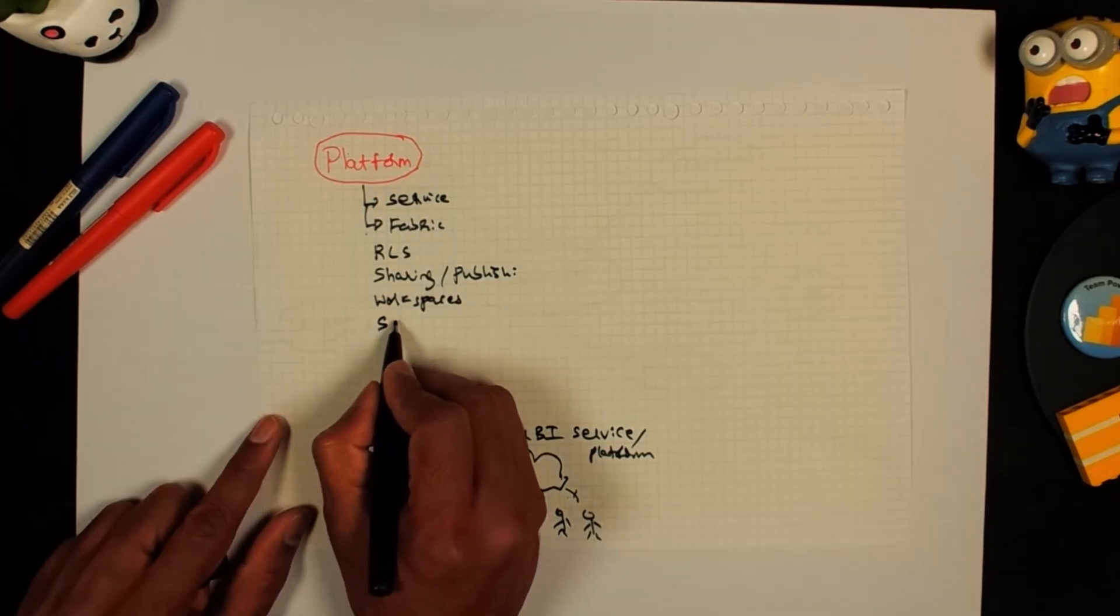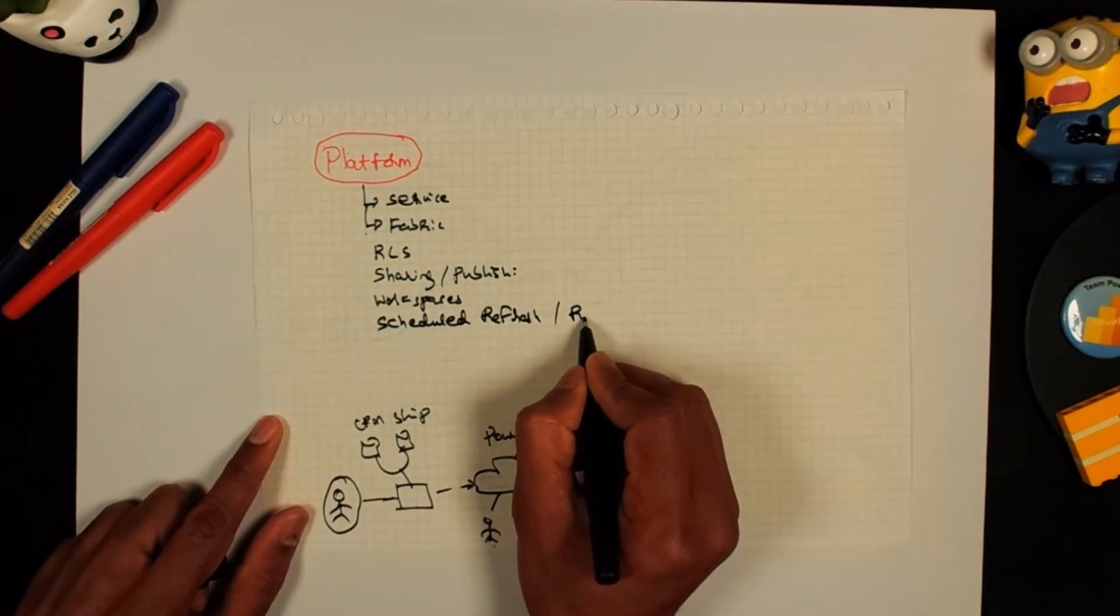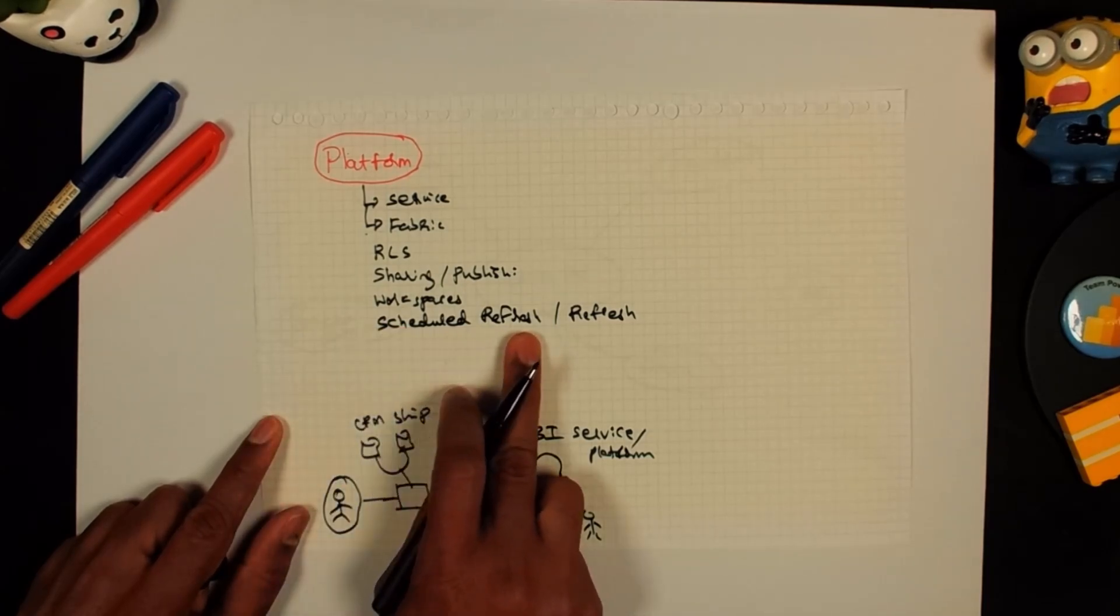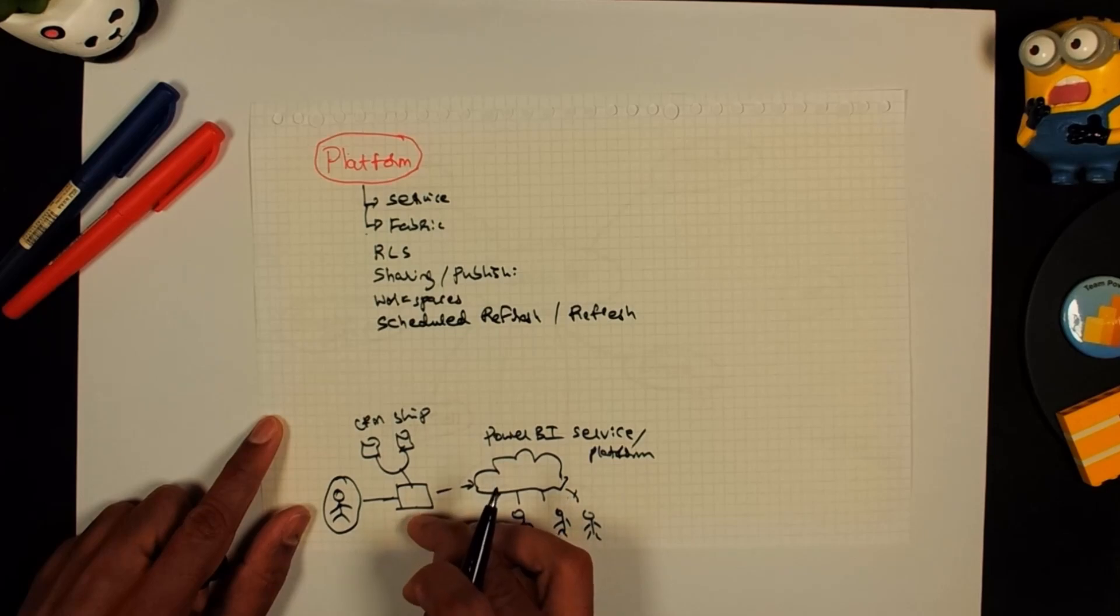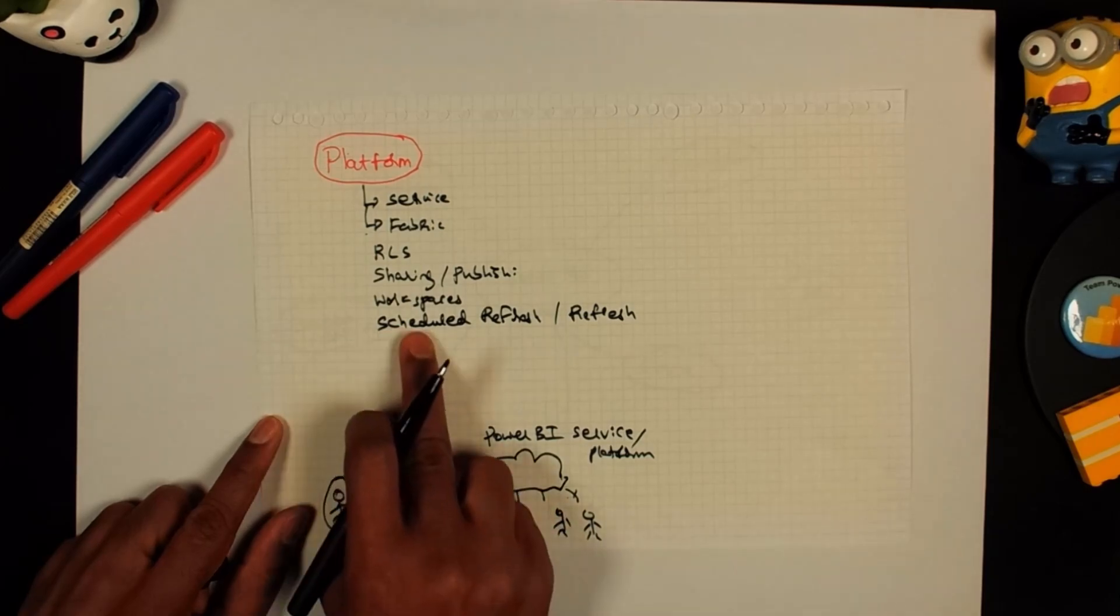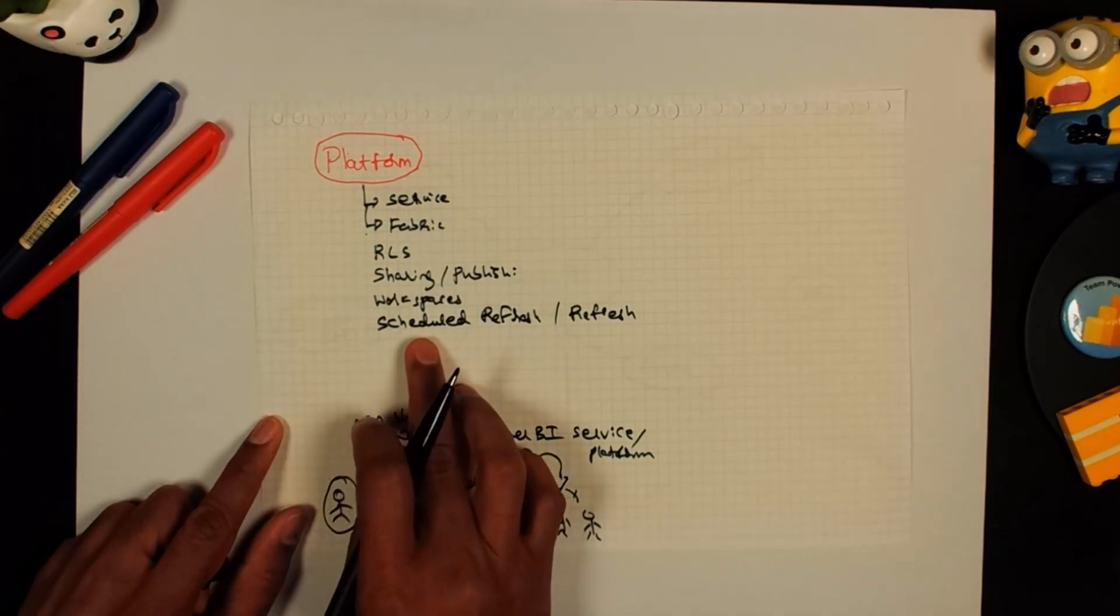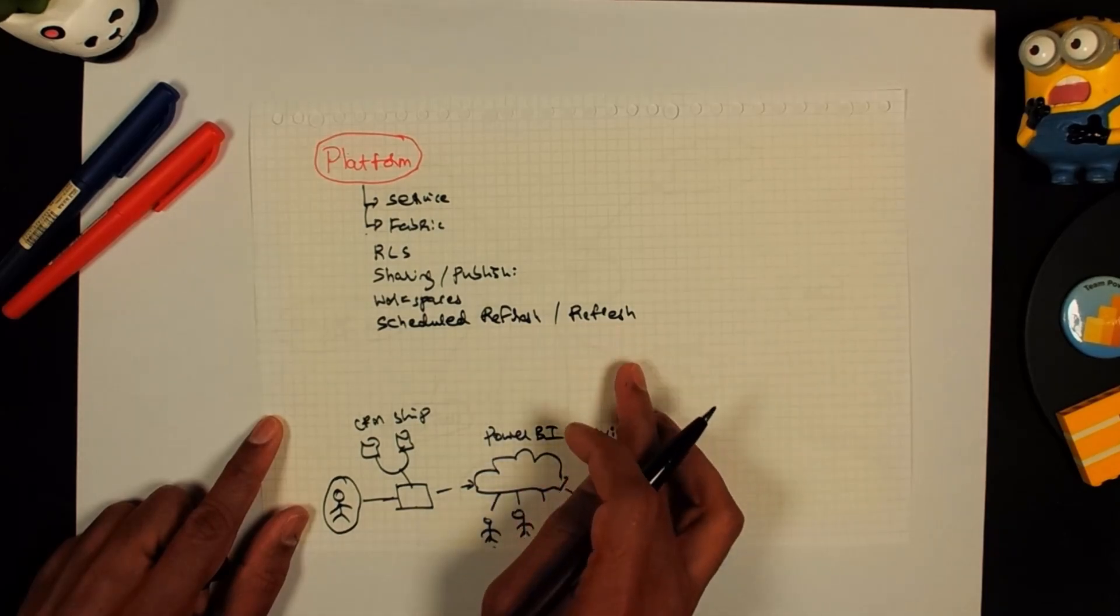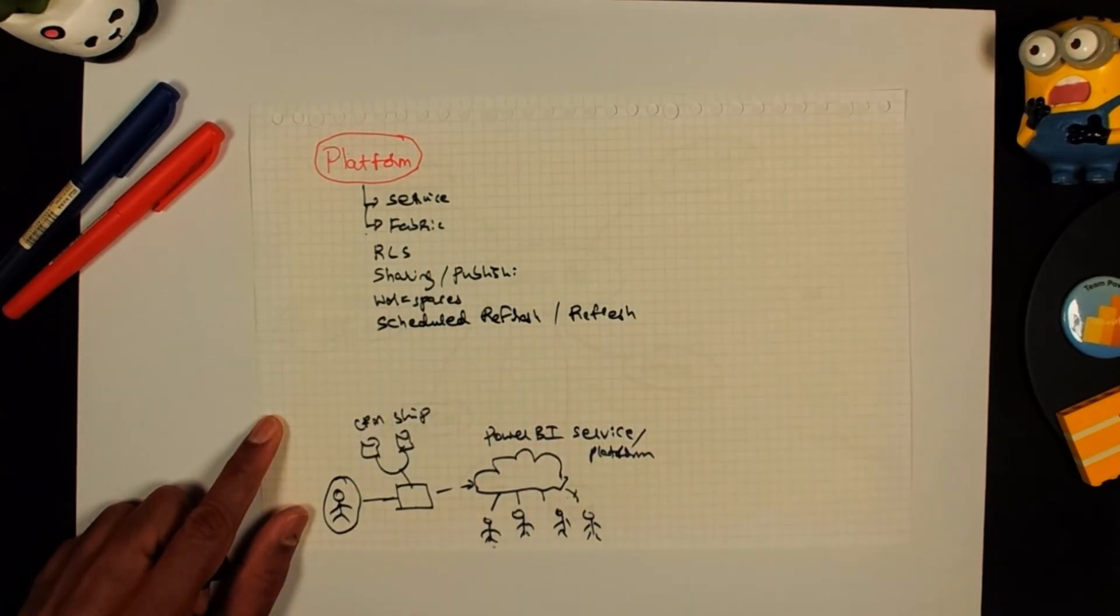Then you have got scheduled refresh as well as refresh. What these words mean is, if you have got a report and you're publishing it, let's say you've got new customer data and new shipment data, you don't need to manually update this. You can set up a scheduled process that pulls in the new data, updates the report and updates the thing here. So all of these people are seeing up-to-date information. So that's called scheduled refresh. You can schedule it to run once a week or something like that. You can also manually refresh. So if I'm doing manual refresh, then it is just refresh.